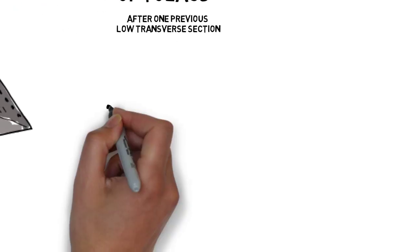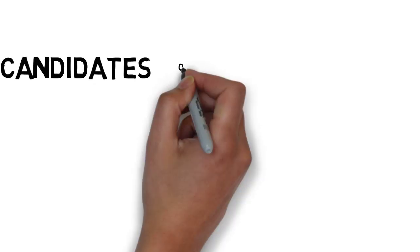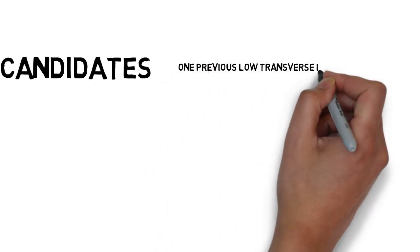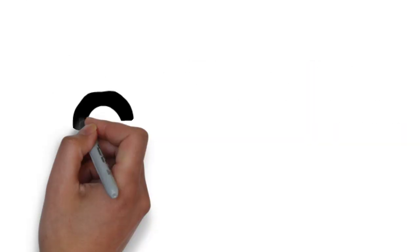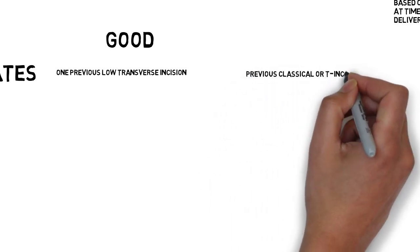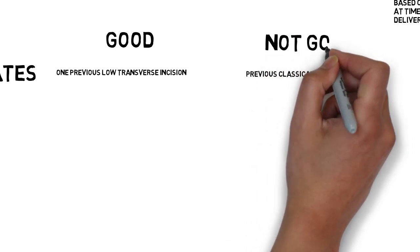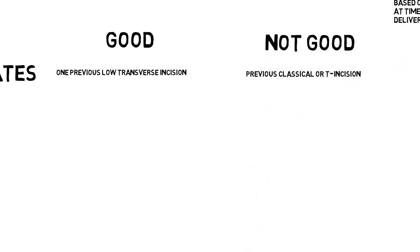Next, who are the candidates for TOLAC? Patients who have had one low transverse cesarean section and have no contraindications to vaginal delivery, like Previa, are good candidates. Patients with previous classical or T-incisions are not candidates. However, individual circumstances must be considered in all cases. For example, one of these patients presenting in advanced labor.